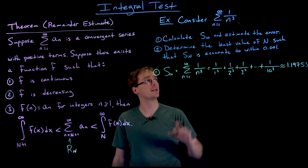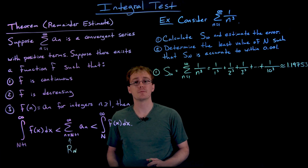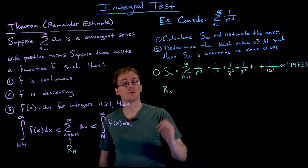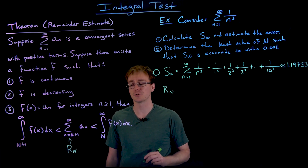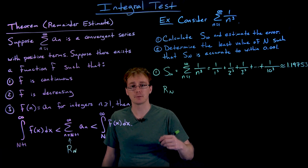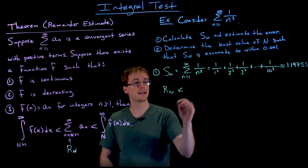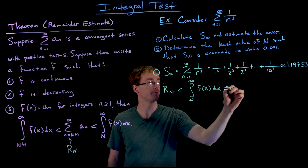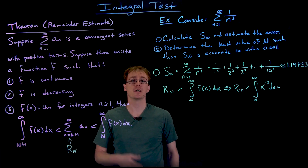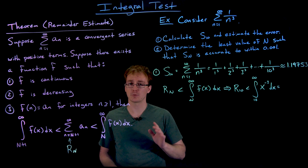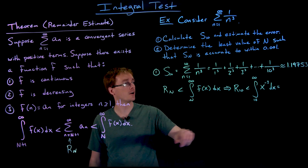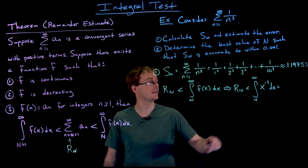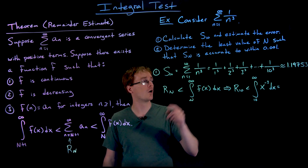To finish part 1 we also want to estimate the error in this approximation, and that's where the remainder estimate theorem for the integral test comes in. We're going to use the upper bound of the inequality — the remainder is always going to be less than the integral from n to infinity of our function that generates the terms in our series. Since we're using the tenth partial sum, the remainder r sub 10 — the sum of the eleventh term, twelfth term, and so on — is guaranteed to be less than the integral from 10 to infinity of 1 over x cubed.